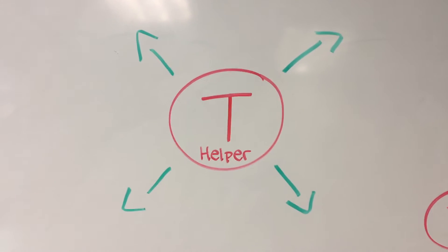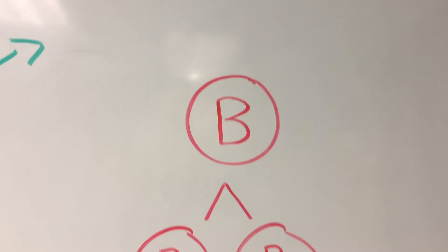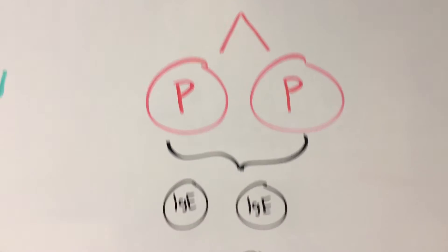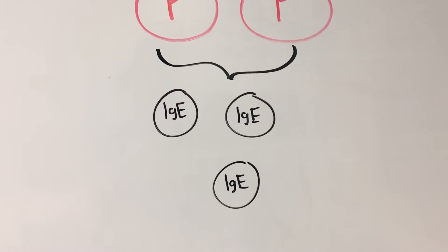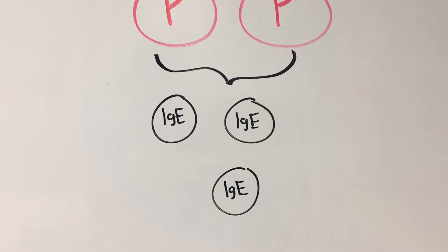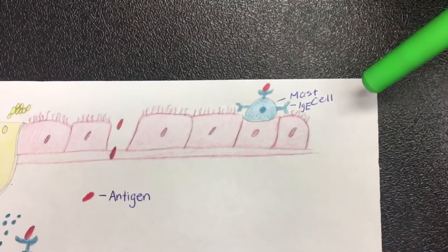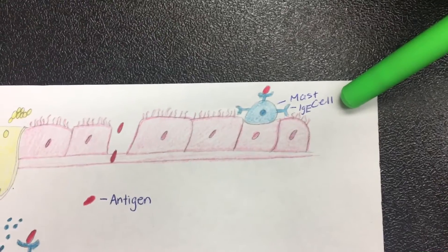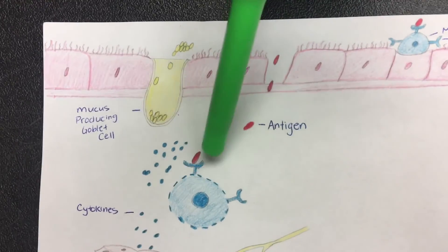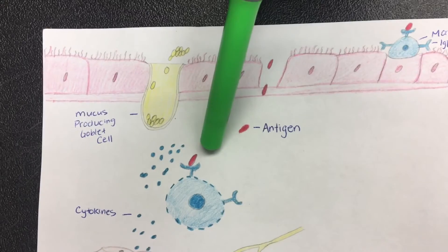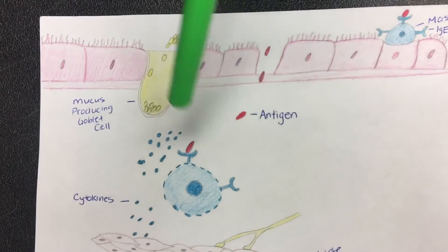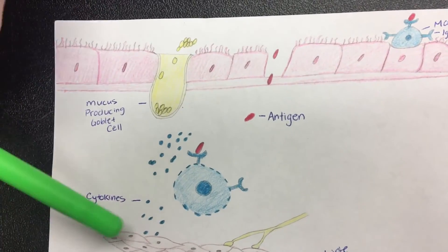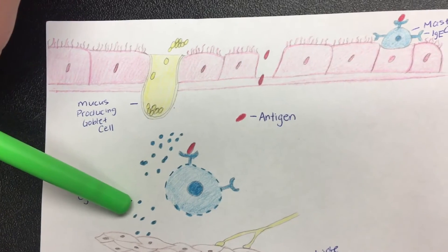Helper T cells will detect this and send out messages to attract B cells to divide and form plasma cells. These plasma cells will produce immunoglobulin E antibodies that are specialized for allergic reactions, particularly type 1 hypersensitivity. The IgE attaches to mast cells, forming an IgE mast cell complex. The allergen will attach to the IgE antibody found on the complex, activating the pathway of the complement system. Afterwards, the IgE mast cell complex results in degranulation and the release of histamines, interleukin 5 and 1, and prostaglandins.